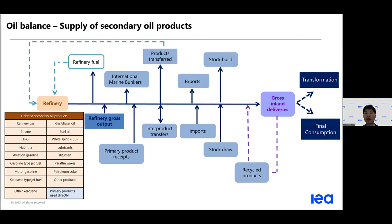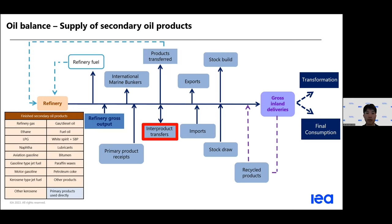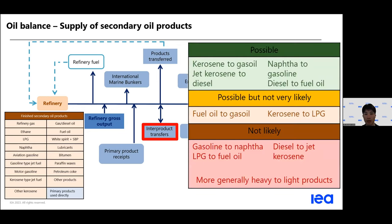Moving on to the supply side of secondary oil products: it all comes from refinery plants as refinery gross output. Some of it is used to operate those refinery plants, for which we collect data as refinery fuel. Inter-product transfers: depending on the characteristics of oil products, a product can be reclassified into another type of secondary oil product, and for this we use the specific flow inter-product transfers. Generally, inter-product transfers are more likely to happen from lighter to heavier oil products.